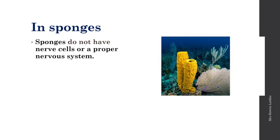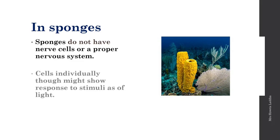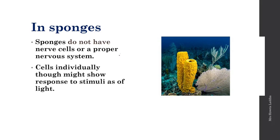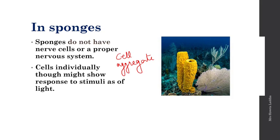Sponges are the most primitive type of non-chordate organisms. They do not have nerve cells or a proper nervous system because they show a cell aggregate body plan, where a number of cells are just staying together without coordination. Individually, every cell might show some response to stimuli like light, but they don't have any nervous system or coordination between cells.